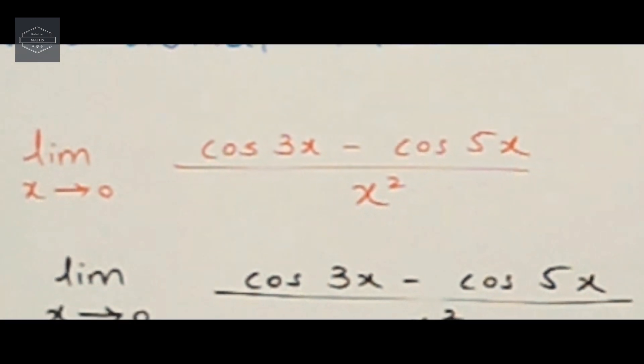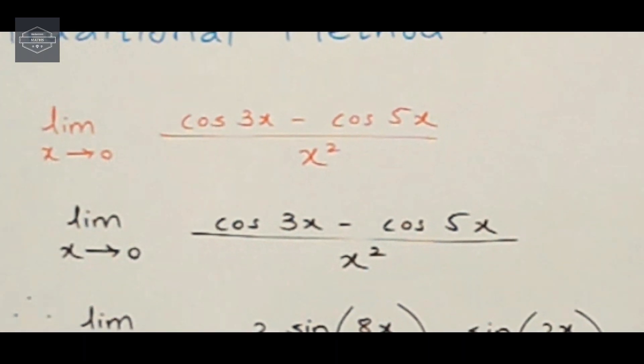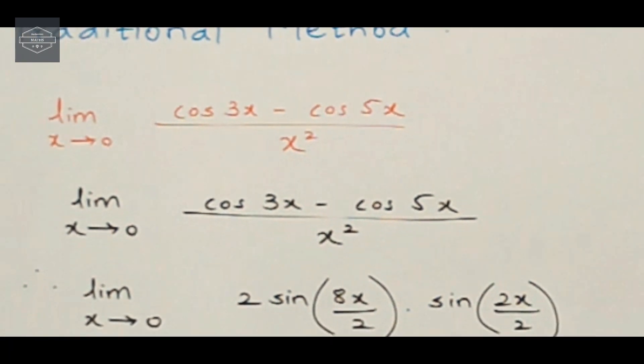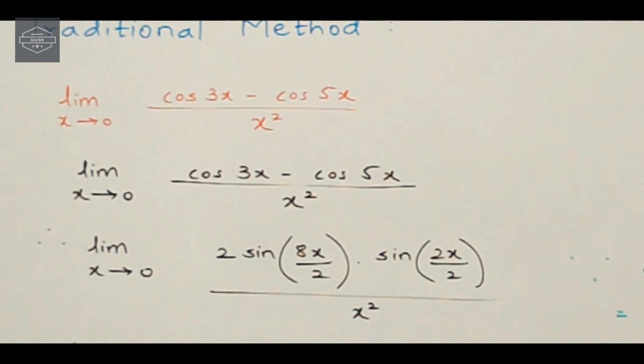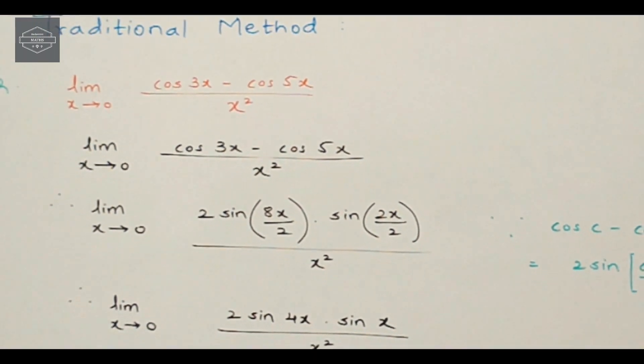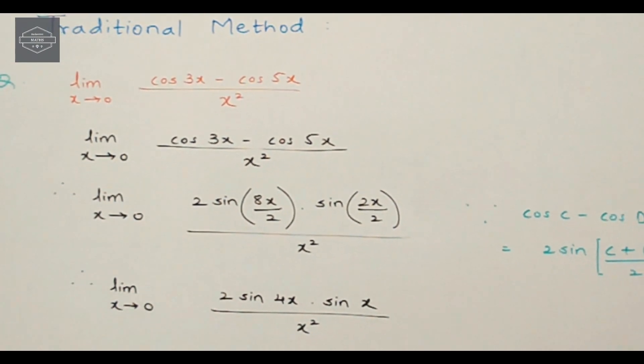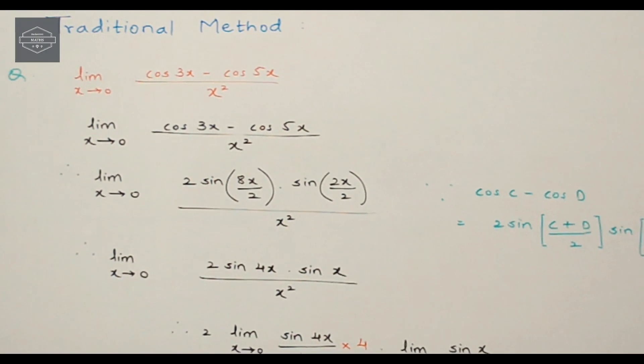Now traditionally, if we try to solve this question by our normal method, that is the method that we use in our board exams, we can use the formula of cos c minus cos d in the numerator and go on solving it before putting the value of limit in the sum and getting the final answer. But obviously this method takes a lot of time and we require something much more quicker in our entrances.